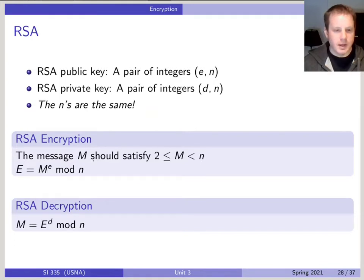So in encryption, we start with the message, also called the plain text. And then to encrypt it, all we do is raise that to a power e modulo n.